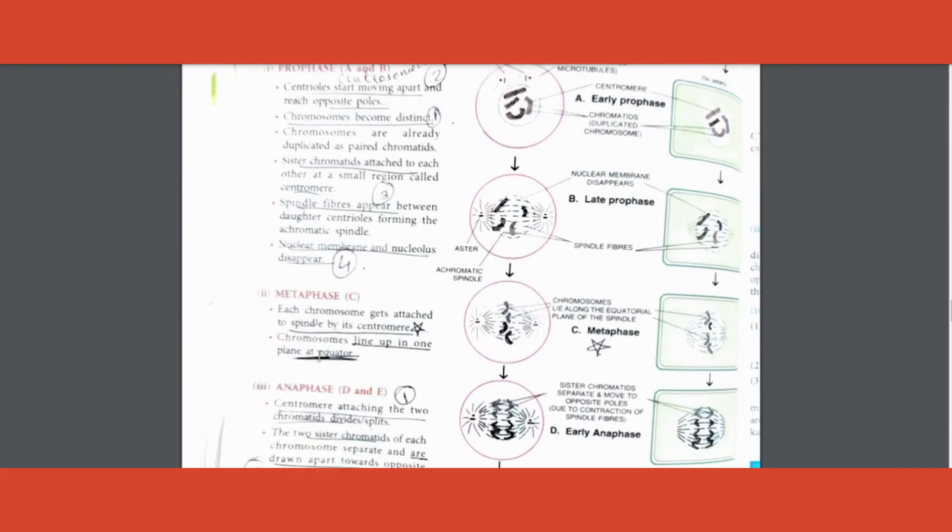If it's a plant, omit the first point that is centrioles start moving towards the poles. If it's an animal, write it. Prophase is the only one where you have to write four points. Metaphase you just have to write one single point - what is it? Chromosomes attached to the spindle by its centromere, and they all line up in the equatorial plane.